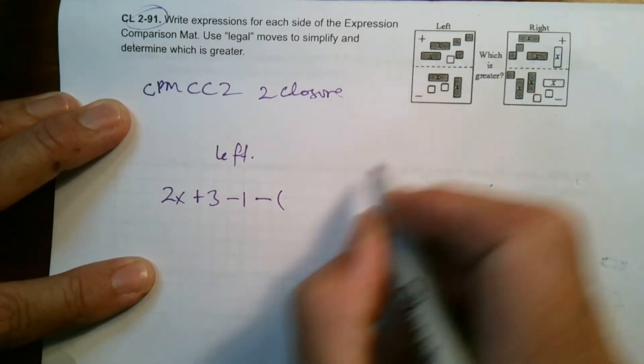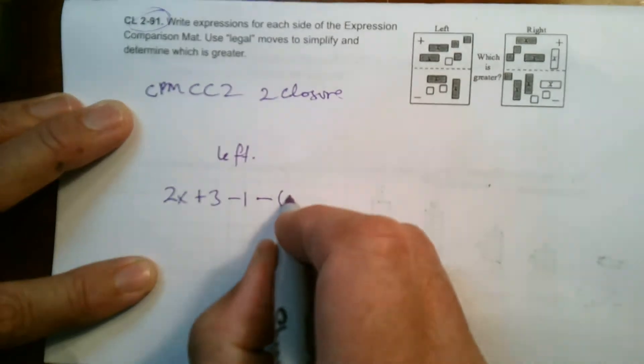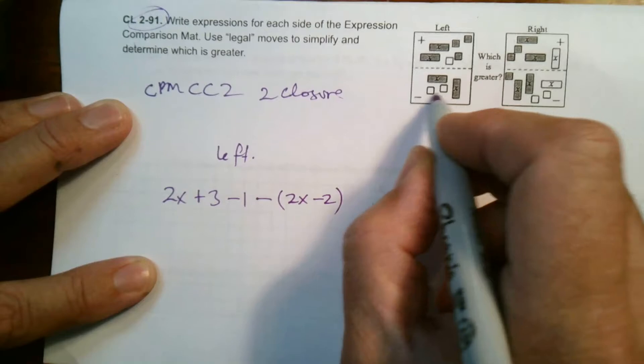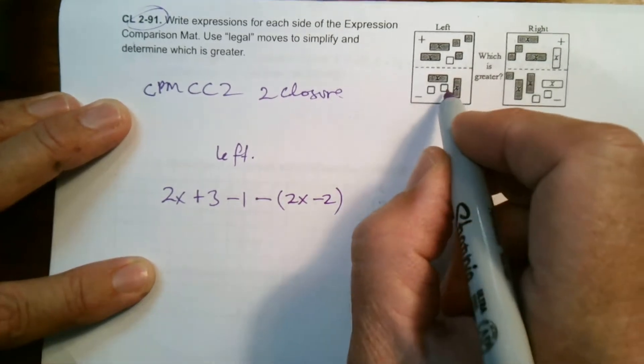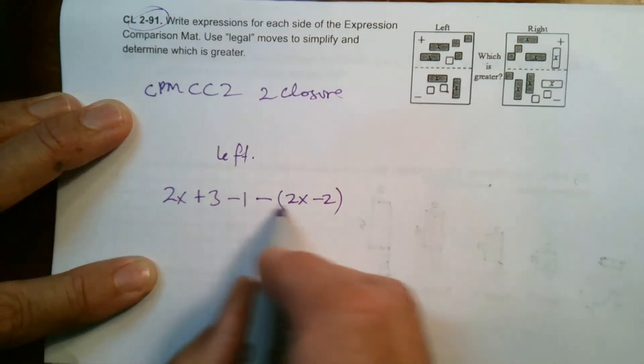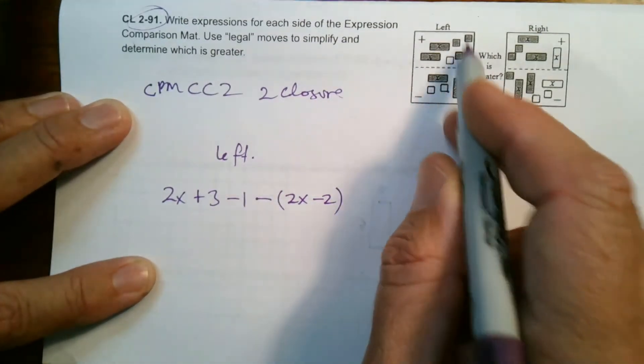And then minus, and then parentheses, what do I have? Down below, 2x minus two, right? Because it's two negative twos. So it's 2x minus, or you could say plus negative two. So this is the left side, based on what I see here.